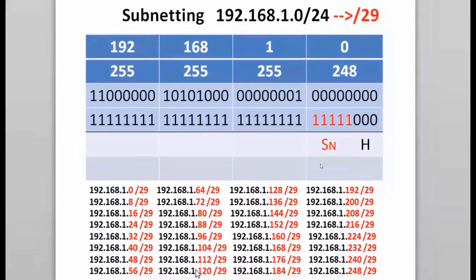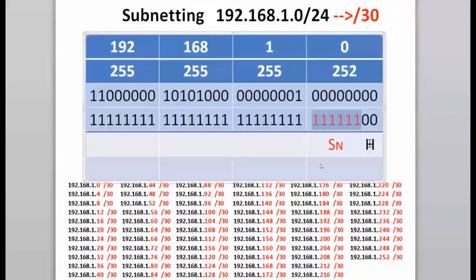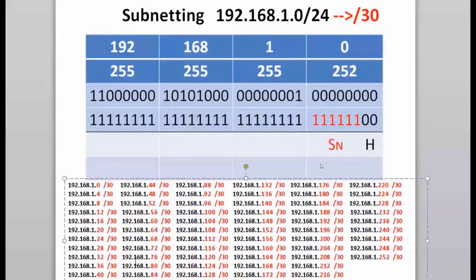Borrowing five bits looks like this, and borrowing six bits looks like this. I've borrowed six bits from the original eight-bit host portion of the slash 24 network, giving two to the sixth power of possible subnetworks, meaning 64 subnets. The host portion is now only two bits, or two to the second power, meaning only four host addresses per subnet. After reserving the network and broadcast addresses, only two usable hosts per subnet remain. On a LAN, we typically do not go higher than a slash 30 subnet mask, or we won't have enough addresses for hosts.